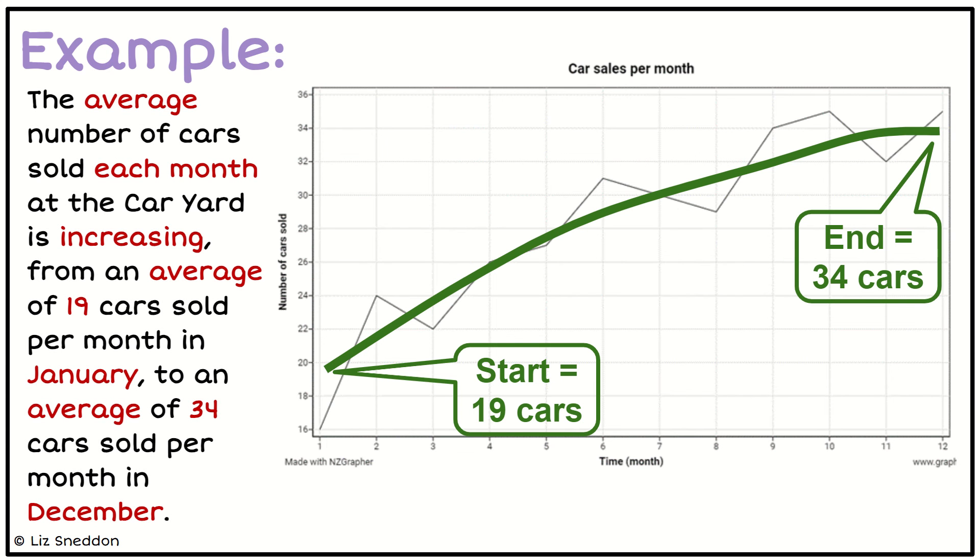So here's an example. So we can talk about the trend being our average, because that's what it is. It's talking about the average over a period of time. So the average number of cars sold, because that's what my numeric variable is, is increasing. It's going upwards. And it's going from an average of 19 cars sold per month in January to an average of 34 cars sold per month in December. So notice I'm doing the coordinate, the value, and the month for the start and end points.